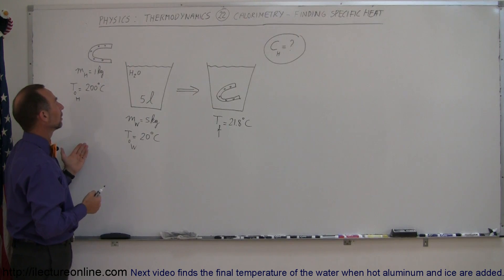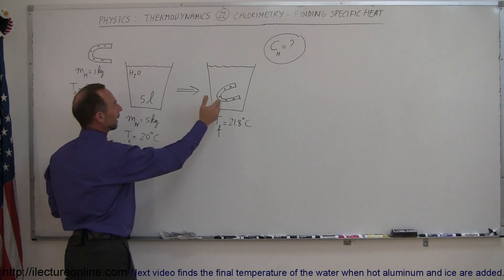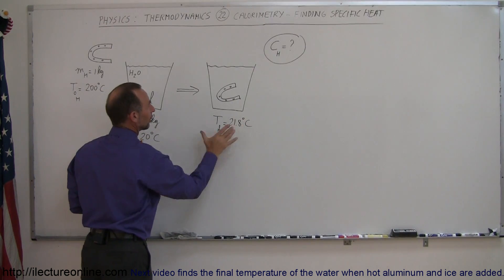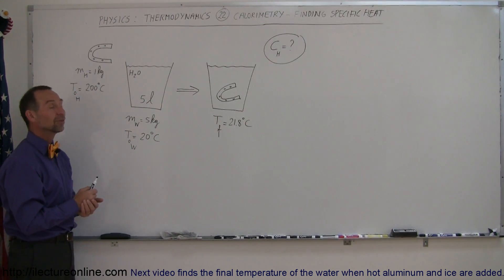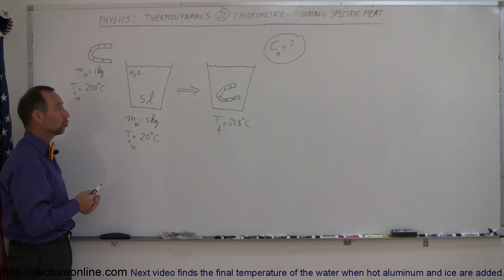And now wants to cool down the horseshoe by dumping it into the water. And the water then, together with the horseshoe, will end up with a final temperature of 21.8 degrees centigrade. The question then is, what is the specific heat of the horseshoe?